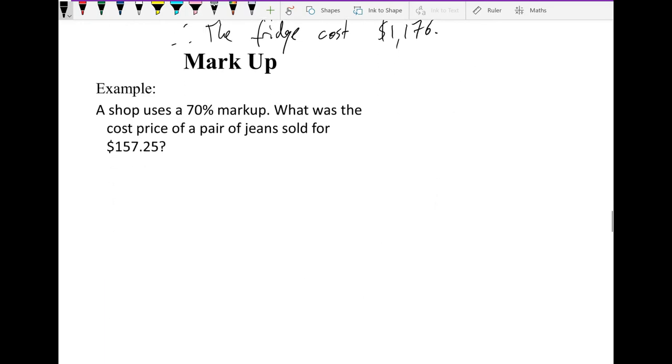Really easy math, communicated well. Next one. This one's a little bit trickier. A shop uses a 70% markup. What was the cost price of a pair of jeans that sold for $157.25? We know they mark it up 70% and we know they sold it for this amount. We need to find what the cost price was. We're not adding on; we already know how much it sold for.